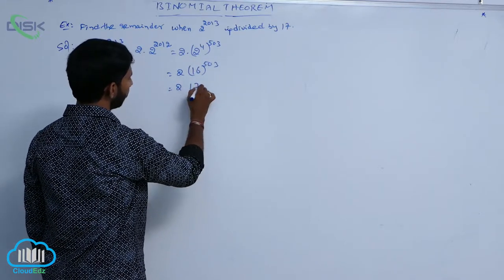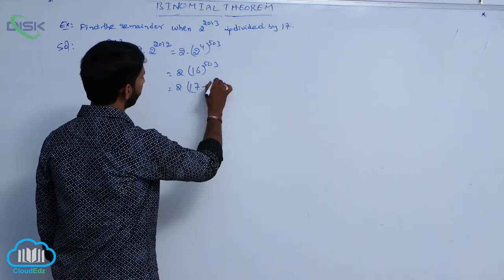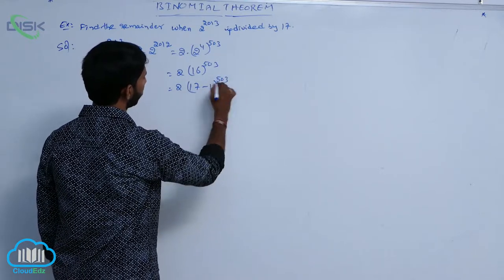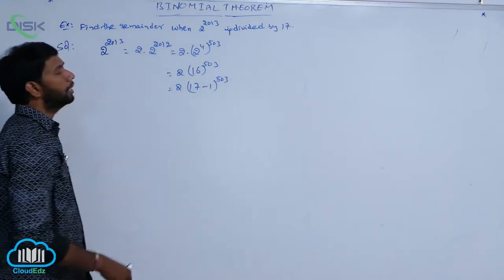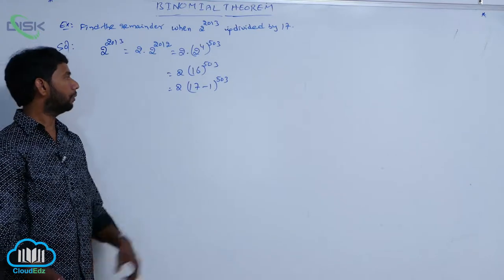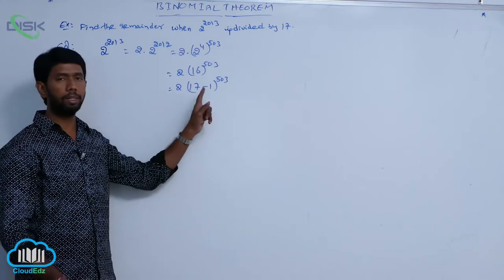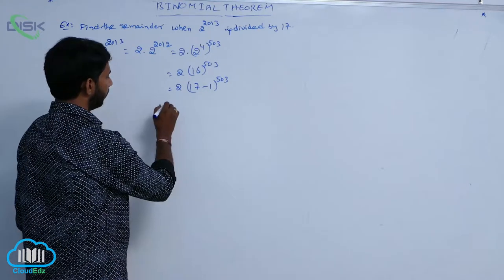16 can be written as (17 minus 1) whole power 503. This is in the form of (x minus a) whole power n, so we expand the terms.